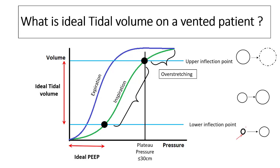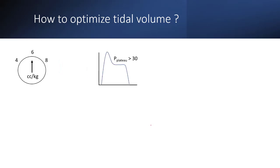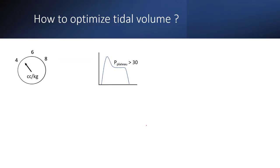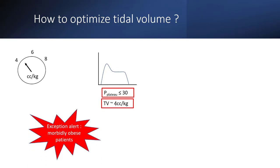To optimize tidal volumes, start with 6 cc per kg and perform an inspiratory pause to get a plateau pressure. If the plateau pressure is more than 30, decrease the tidal volume, repeat the inspiratory pause, and keep dropping until the plateau pressure is less than 30 or the tidal volume reaches 4 cc per kg. In morbidly obese patients, slightly higher plateau pressures may be acceptable as this population has not been well studied.